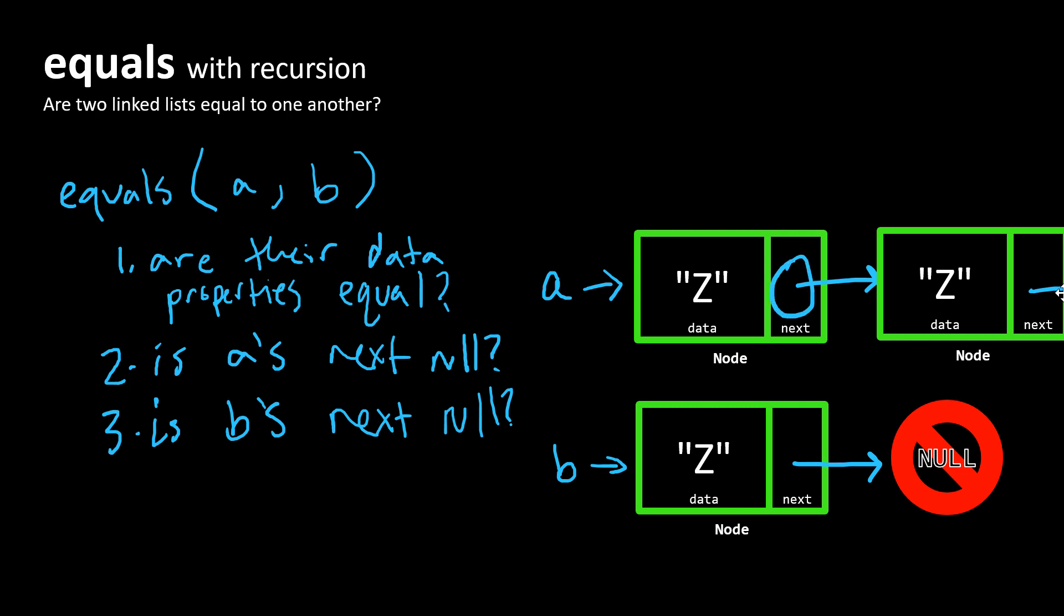And the way we would know that is because this next value is not null, and this one is. So in this case, the second condition wouldn't be met.